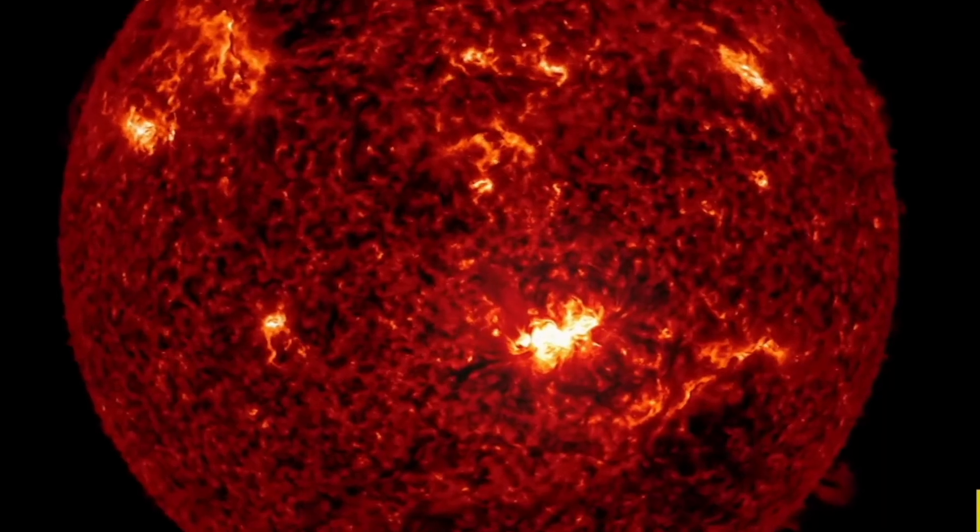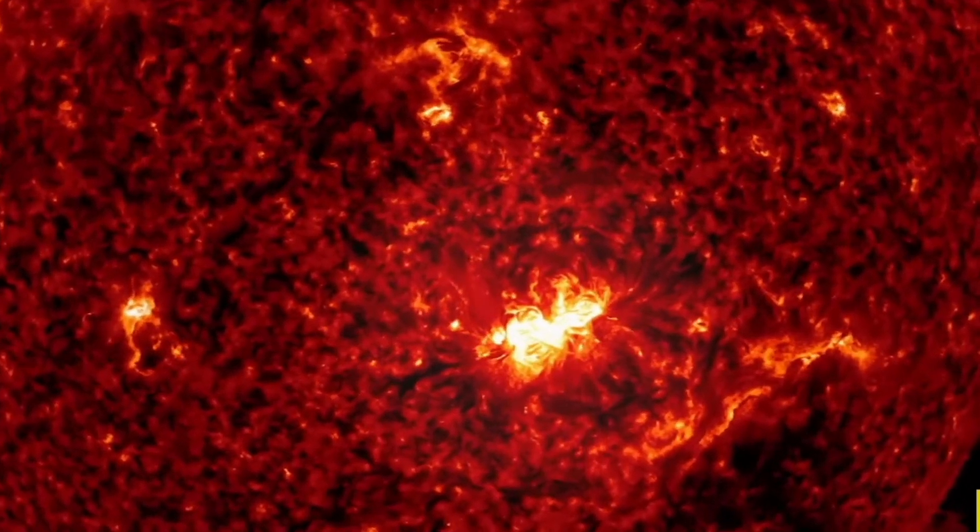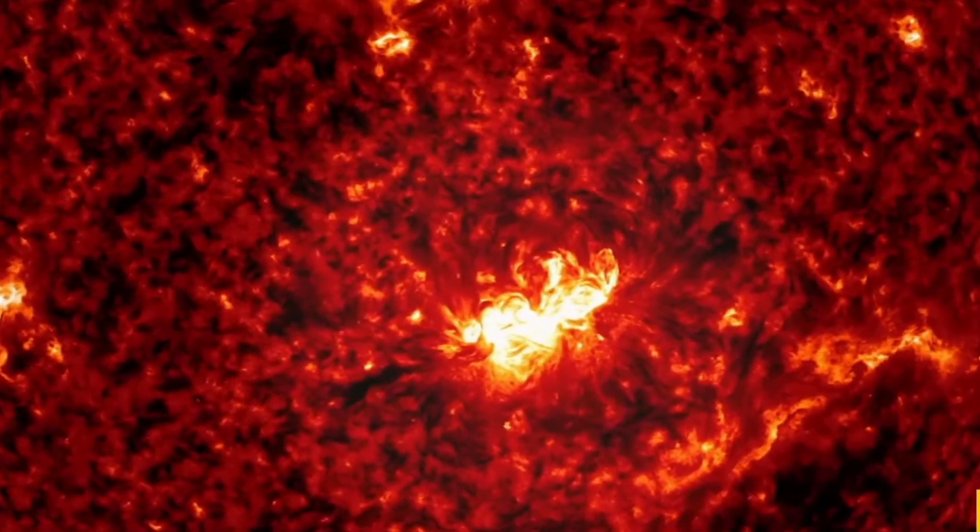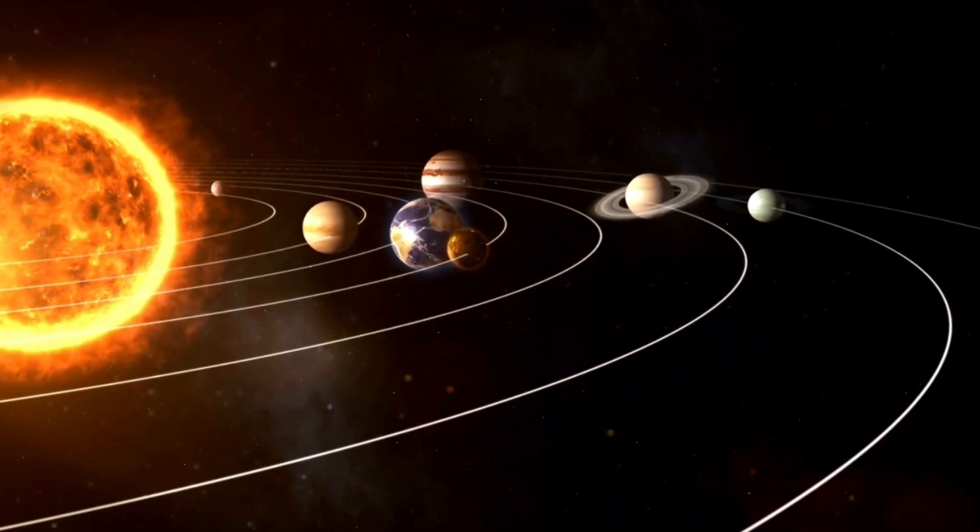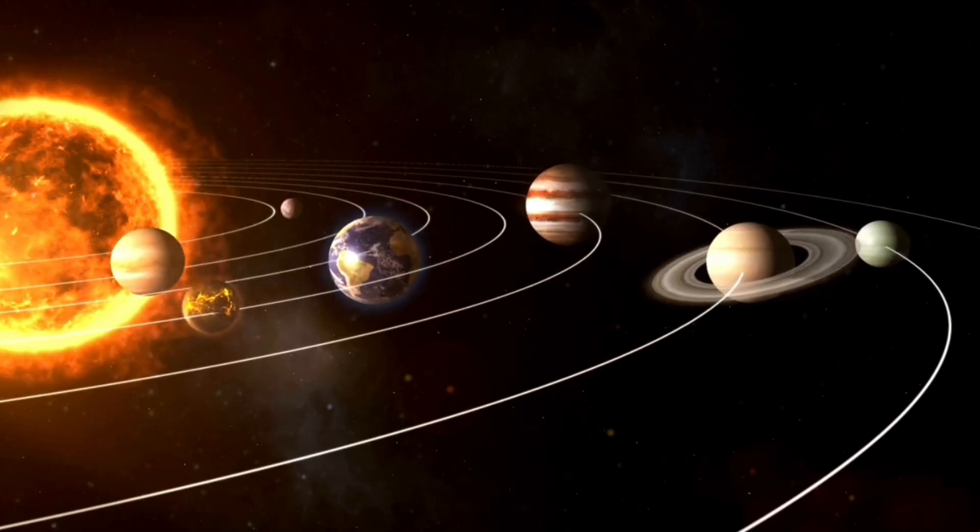But among the stars, there are monsters, true giants that make our sun look small. These stars are so massive that if one of them sat where our sun is today, it could swallow not just Earth, but entire orbits of planets, stretching out past Mars or even Jupiter.